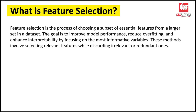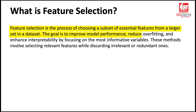So let's first understand what is feature selection. Feature selection is the process of choosing a subset of essential features from a larger set in our dataset. The goal is to improve model performance, reduce overfitting, and enhance interpretability by focusing on the most informative variables. These methods involve selecting relevant features while discarding the irrelevant or redundant ones.